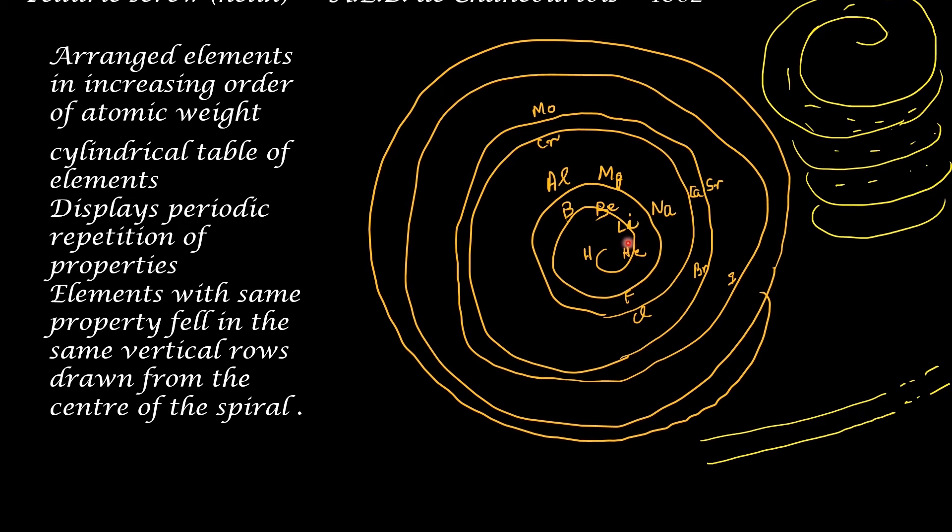I have marked only the position of a few elements only to make clear how the similar elements come under the same column. You can see here lithium, sodium, calcium, strontium come under the same group starting from the center outward. They are similar elements having more or less similar properties. Elements with the same property fell in the same vertical row drawn from the center of the spiral. So I have shown this cylindrical pattern and this circular pattern so that you can understand how these vertical rows are drawn. I will not claim that this diagram is very perfect. Anyway, this method of classification did not gain much attention. So scientists continue to make new attempts.